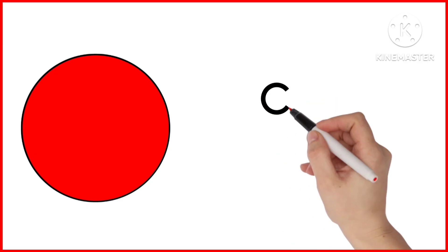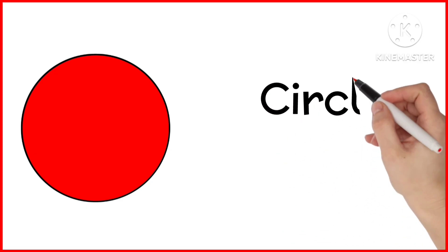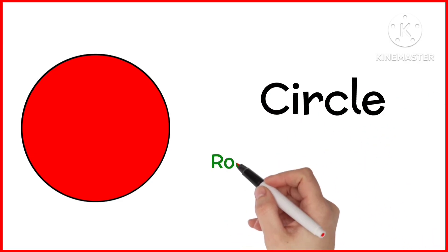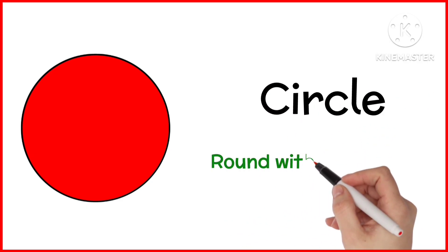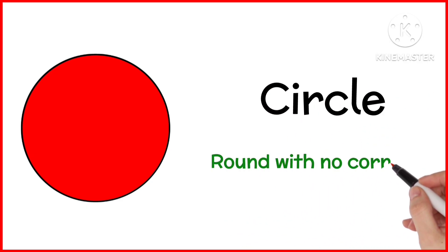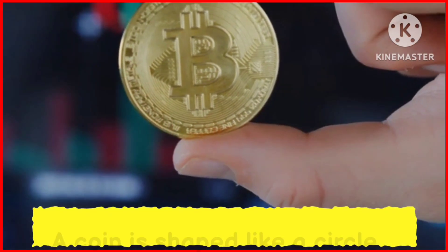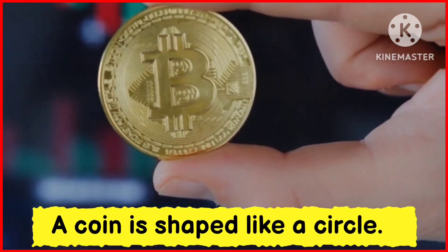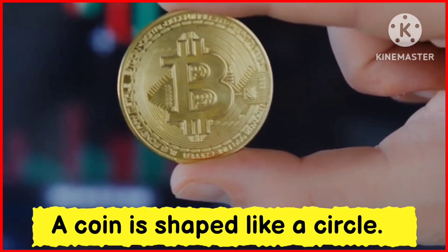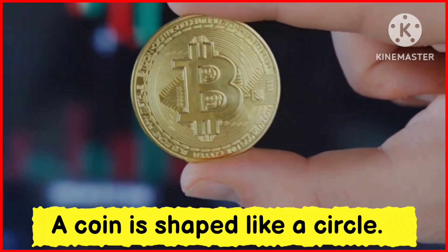This is a circle. Circle is round with no corners. A coin is shaped like a circle.